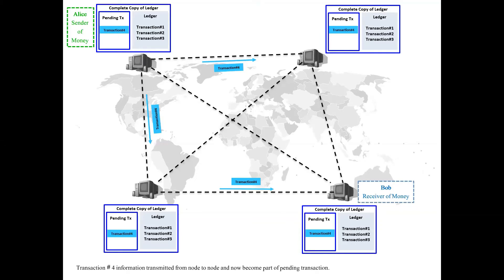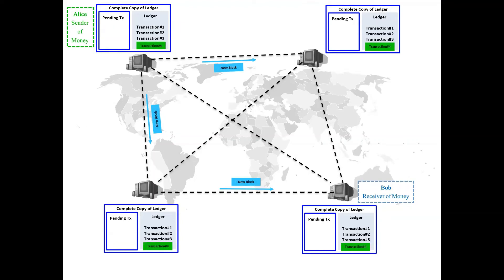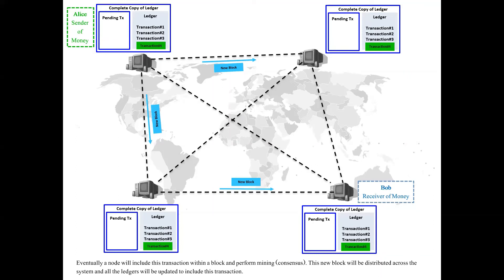Alice will then disseminate this new block across the network. When the new block is disseminated, it contains transaction number four. All participating nodes will include this new block in their ledger copies. Transaction number four is now confirmed, and the next new block will be transaction number five.